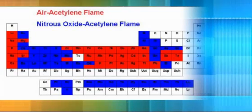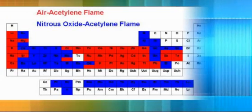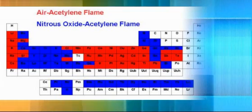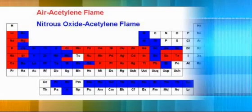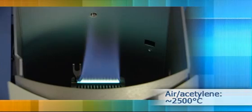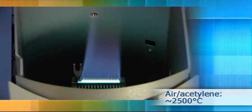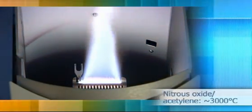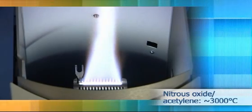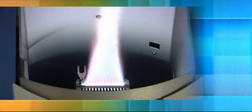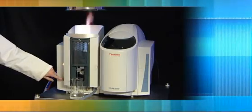As some elements need more energy for atomization than others, it is essential to have a flexible choice of flame types. The standard air-acetylene mixture provides a flame of about two and a half thousand degrees Celsius, suitable for group one and two elements and many transition elements. Some elements require the hotter nitrous oxide-acetylene mixture with flame temperatures approaching 3,000 degrees Celsius. This hotter flame reduces interference and can increase sensitivity for refractory elements.